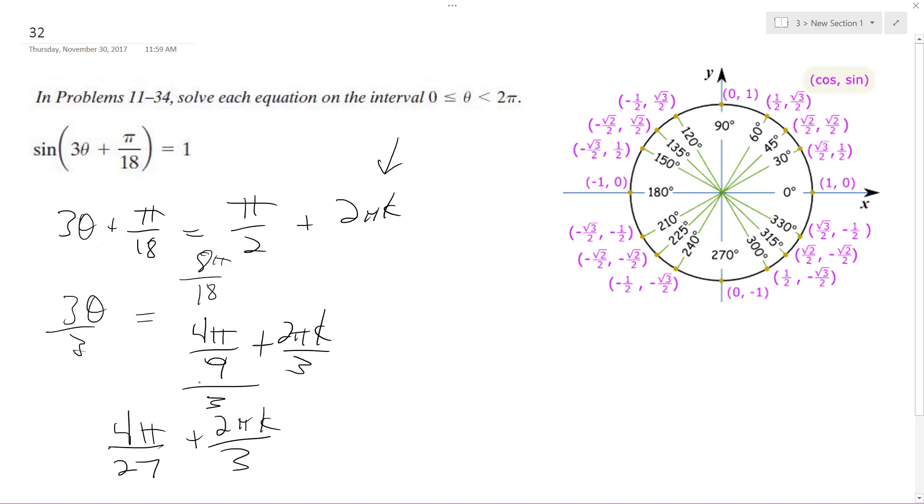So doing this, I take the sine. 4 pi over 7 gives me a positive value for sine, but if I take it plus 2 pi k over 3, do I still get a positive result for y?